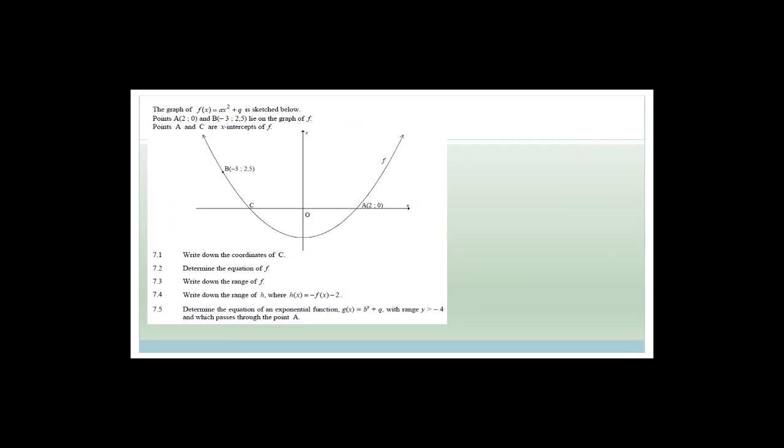Now we have a parabola. The graph of f(x) = ax² + q passes through point A(2, 0) and point B(−3, 2.5). Points A and C are x-intercepts of the graph. Since there is no middle term, the parabola is symmetrical about the y-axis. So if A is (2, 0), then C is (−2, 0).